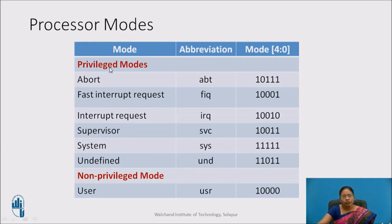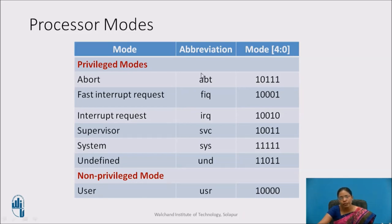The privileged modes — abort, fast interrupt request, interrupt request, supervisor, system, and undefined — have corresponding mode bits in the CPSR register, along with abbreviations used to indicate each particular mode. For example, if abort is the mode, that is indicated in the register as R13_ABT, meaning R13 register is acting in abort mode. Similarly: fast interrupt request is FIQ, interrupt request is IRQ, supervisor is SVC, system is SYS, undefined is UND, and user is USR. These are the particular mode bits for these different processor modes.